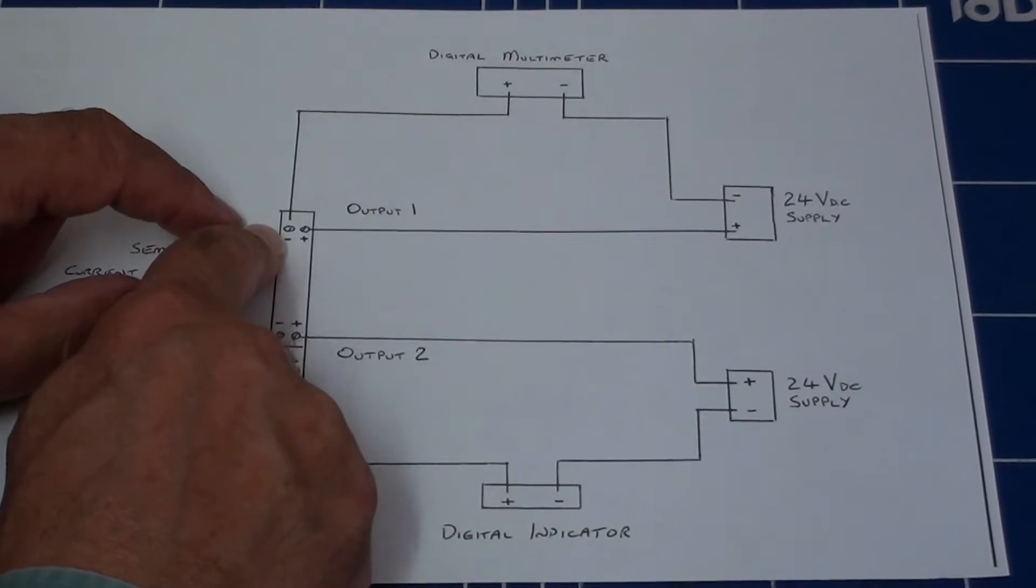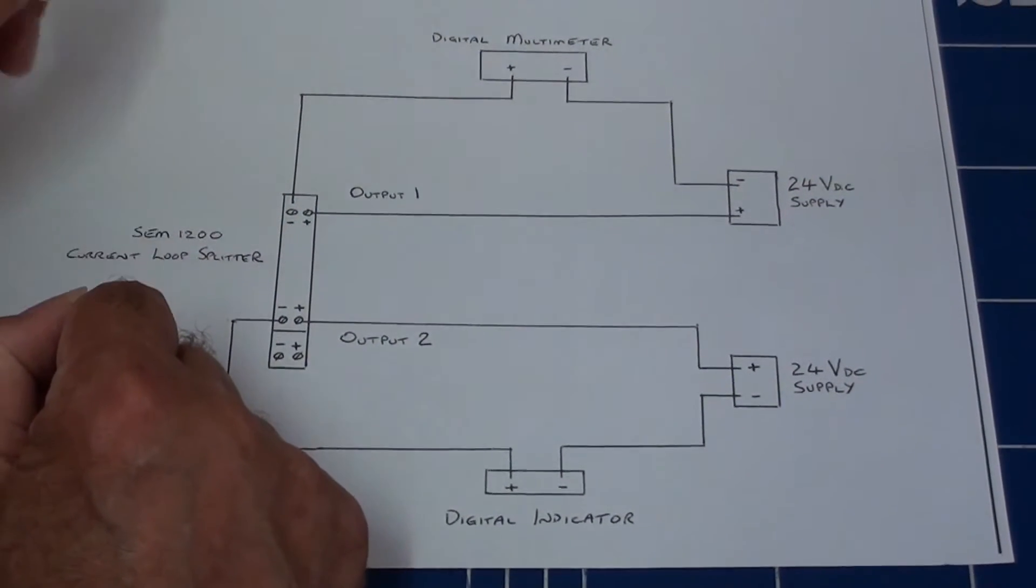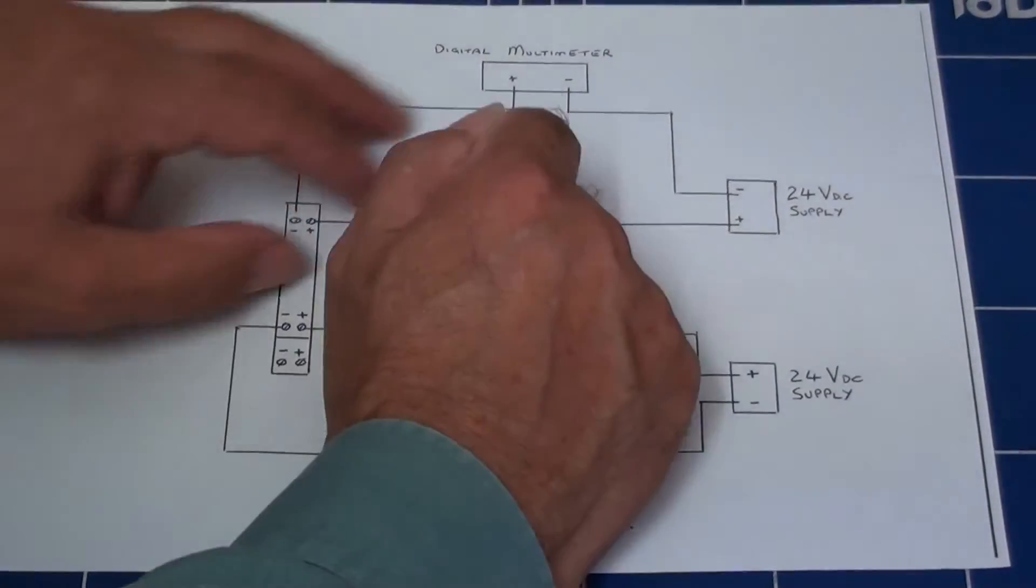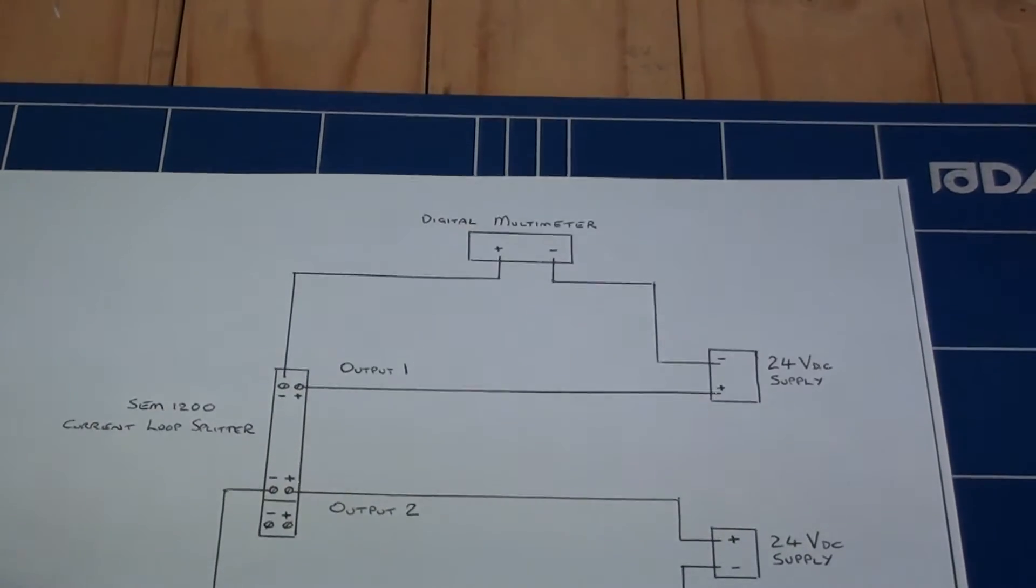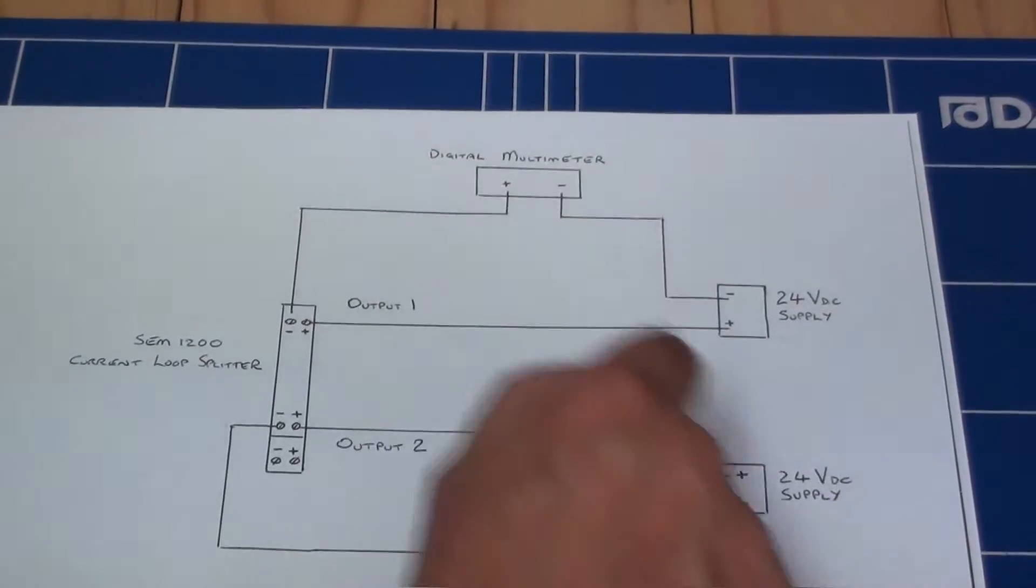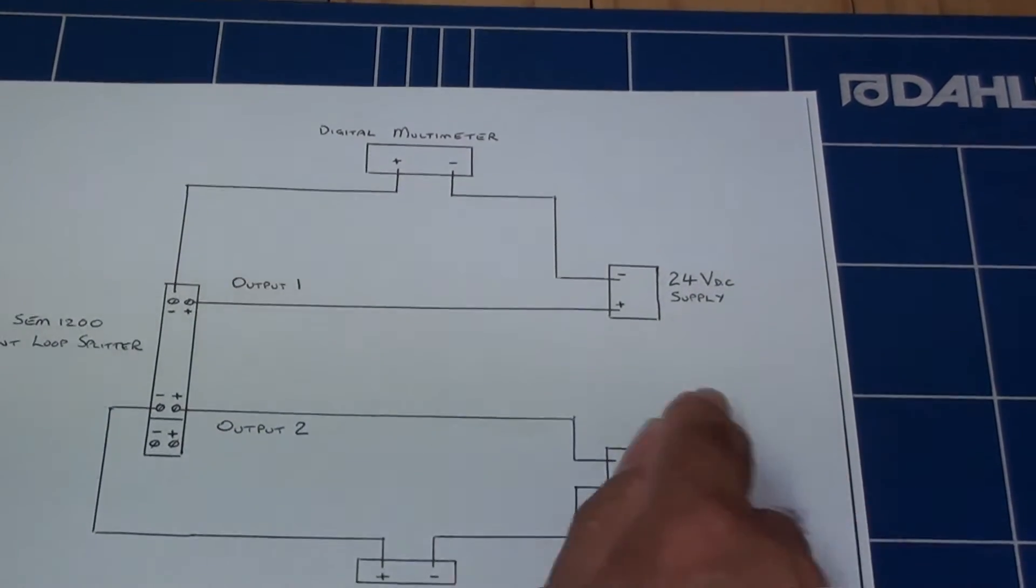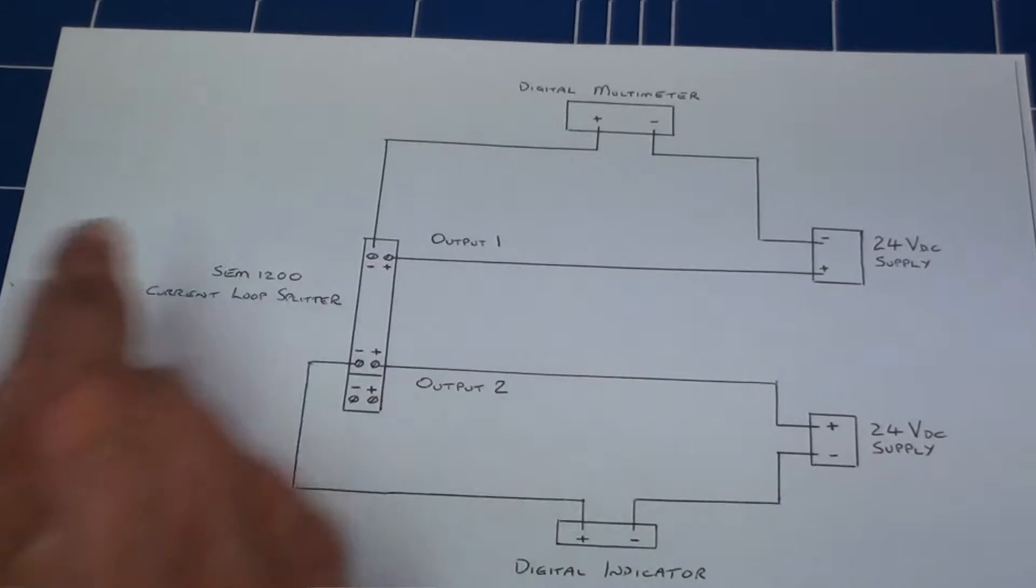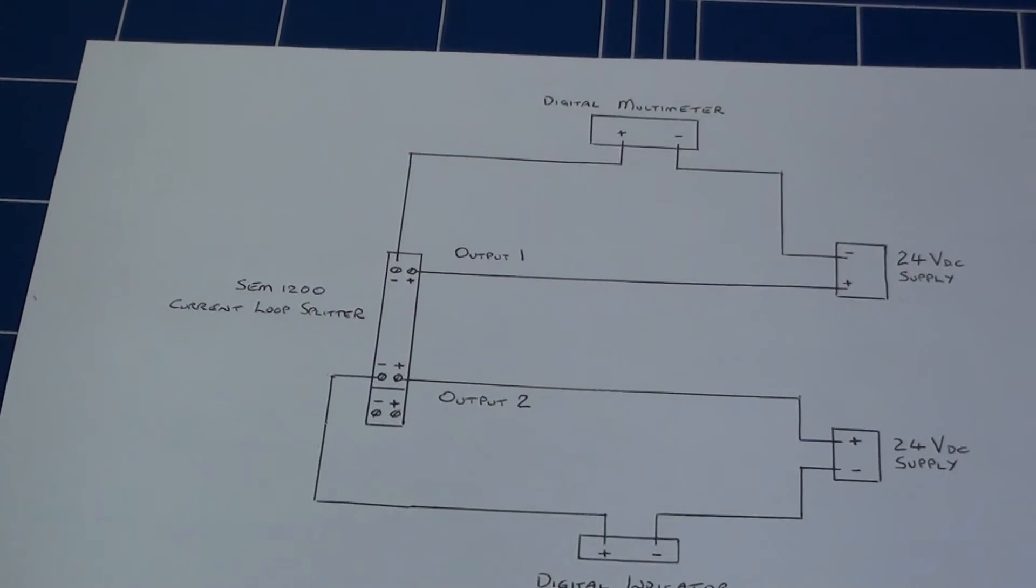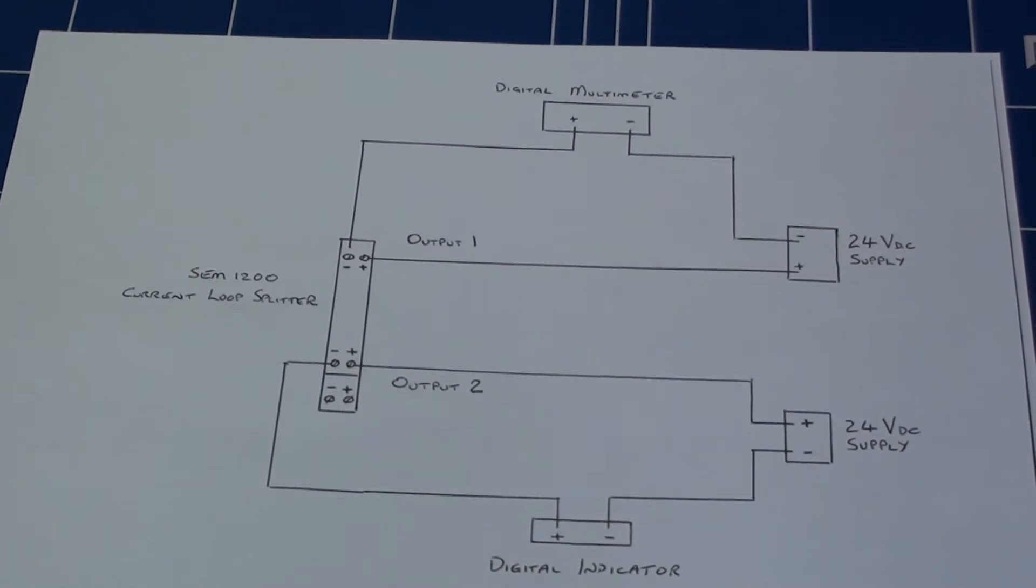On the SEM1200, minus from the output terminal on output 1, for example, goes to the plus on the multimeter. The minus from the multimeter is connected to the negative of the 24V DC supply, and the plus of the 24V DC supply comes back to the plus terminal on output 1 on the SEM1200.